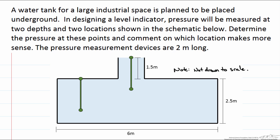In this screencast we are going to calculate the pressure within a fluid at certain depths. We are going to do that through the following example where we have a water tank that is being used for a large industrial space and we want to design a level indicator using pressure measurements. We are trying to determine whether or not having a pressure measurement system here, we will call this system 1, makes more sense than having a pressure measurement system labeled 2 shown here.